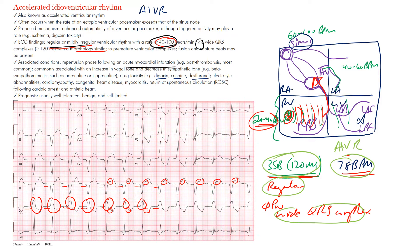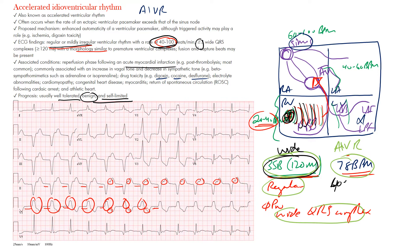AV dissociation is a key feature used to diagnose ventricular tachycardia when visible. Post-MI, AIVR is usually well tolerated, benign, and self-limited. To summarize: it originates from an ectopic focus in the ventricles causing slow cell-to-cell depolarization, widening the QRS complex. Rate is 40–100 bpm; above 100 would be ventricular tachycardia. It tends to be regular with mild irregularity possible.